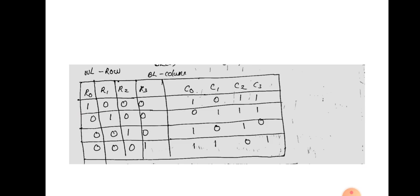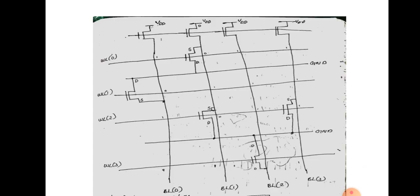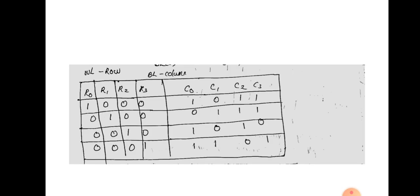This is called NOR-Based ROM. If you have a 4x4 array, you will have 4 horizontal lines and 4 parallel bit lines. If you have a ground line between 2 word lines, you will have the ground line. If you use the algorithm, you will have 2 rows.